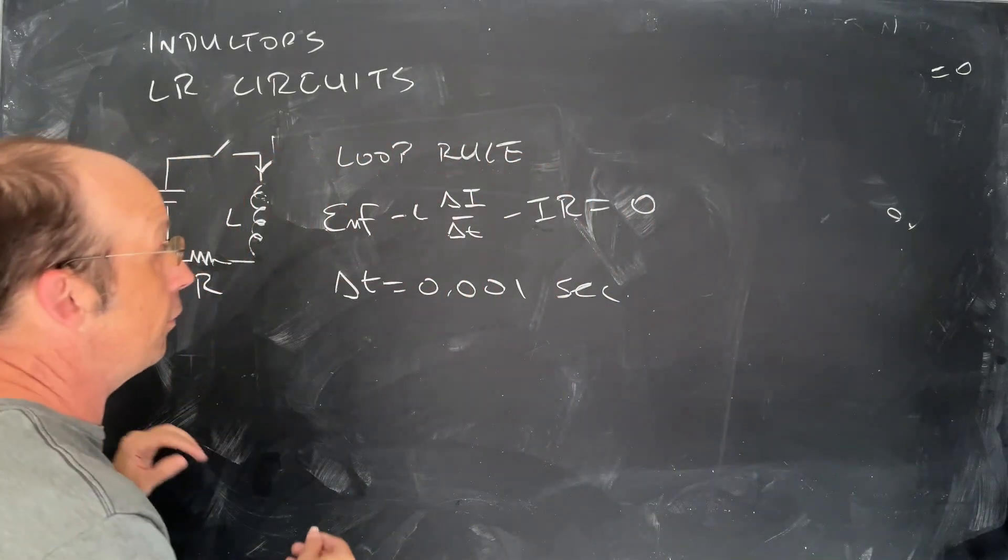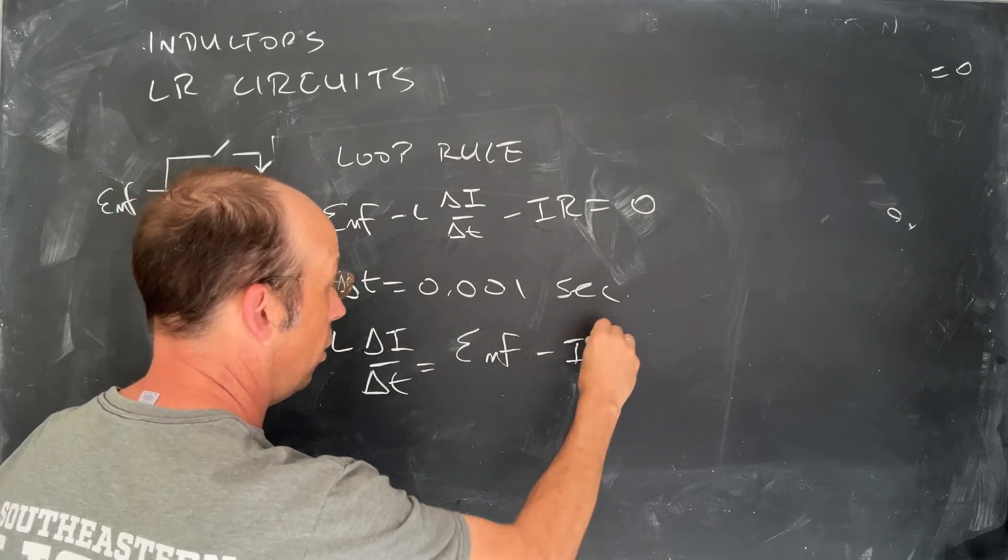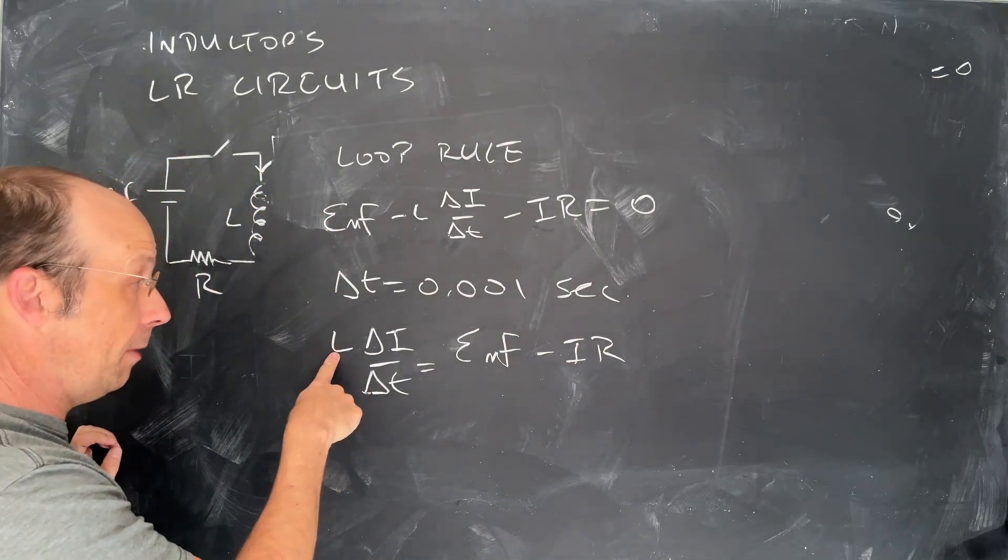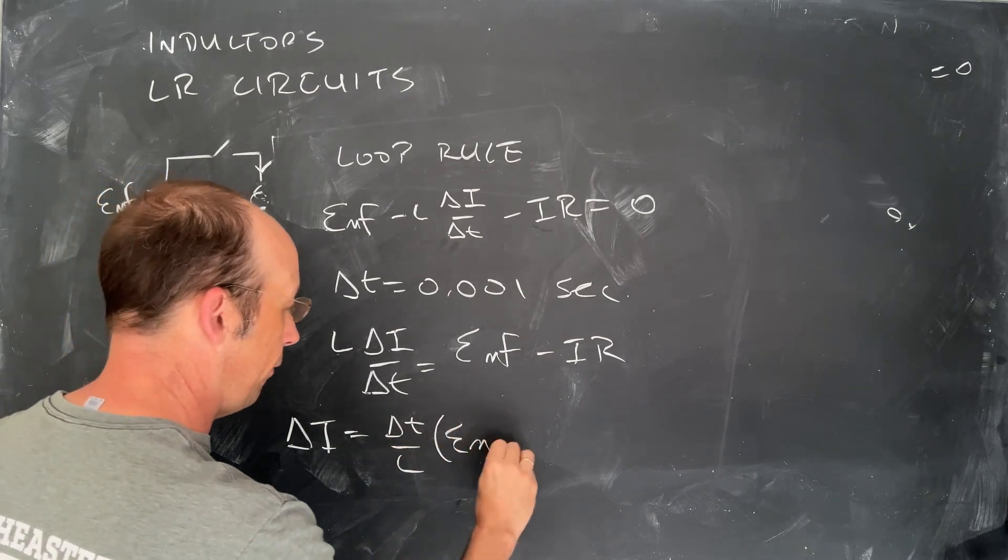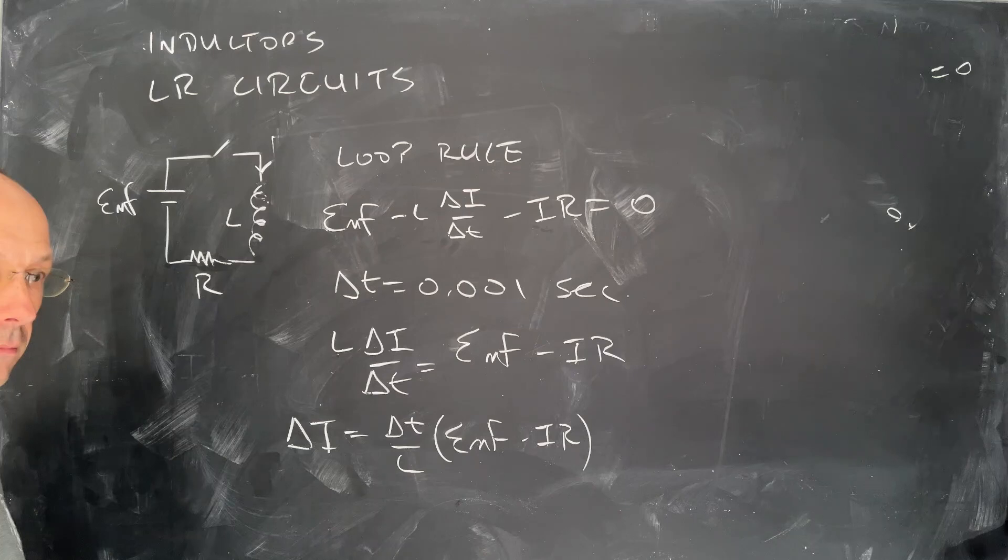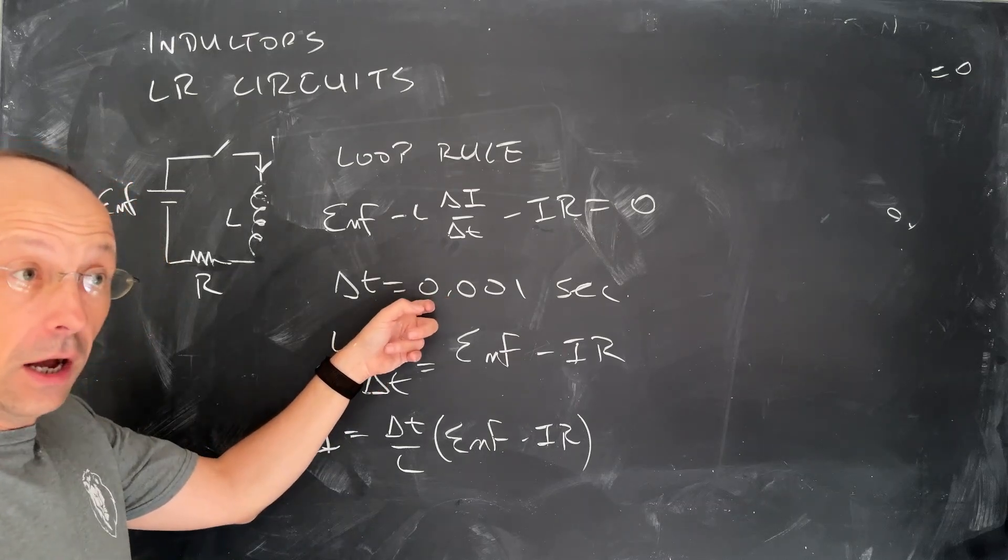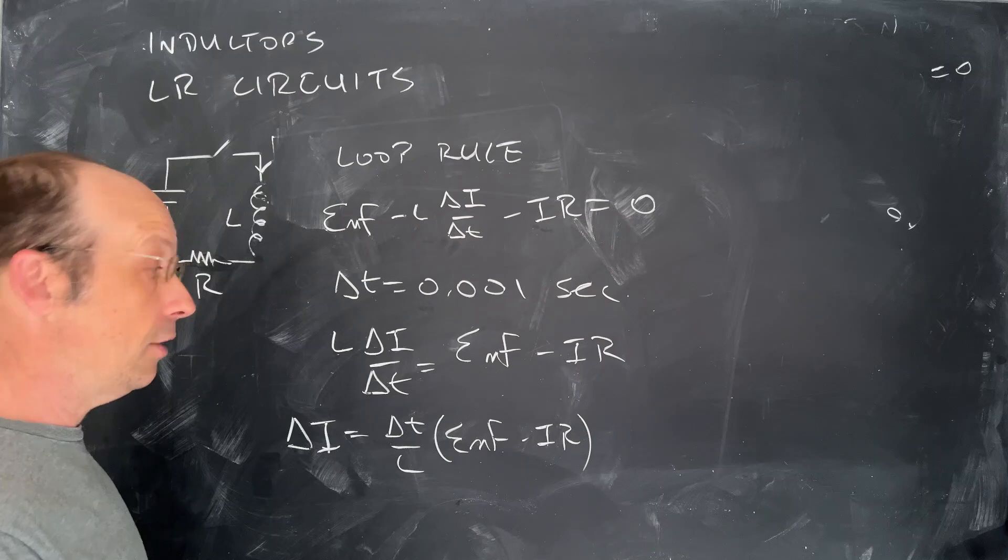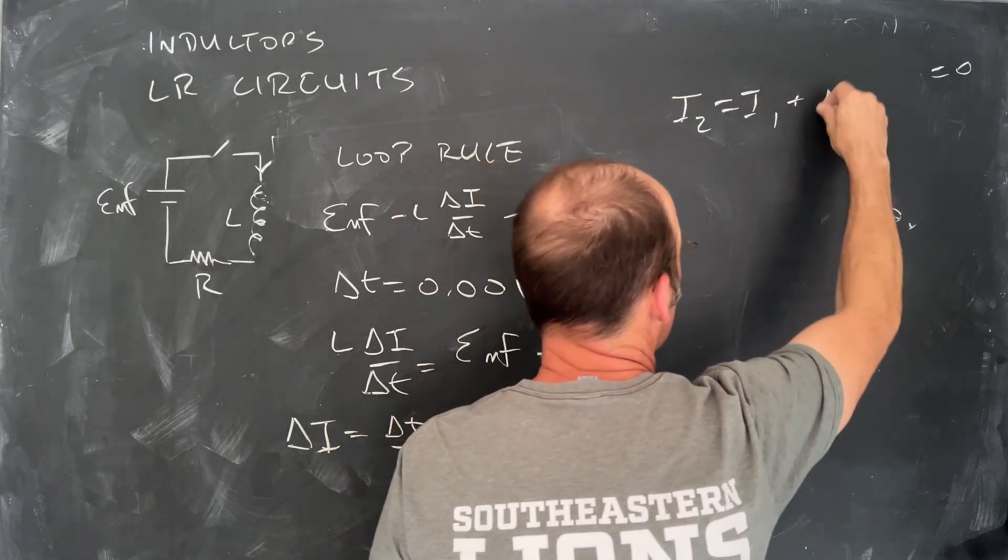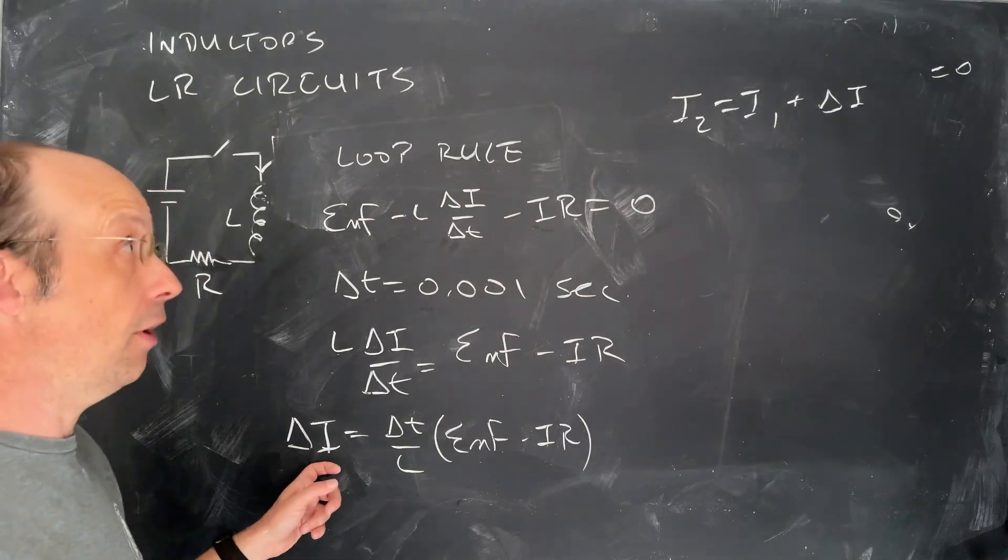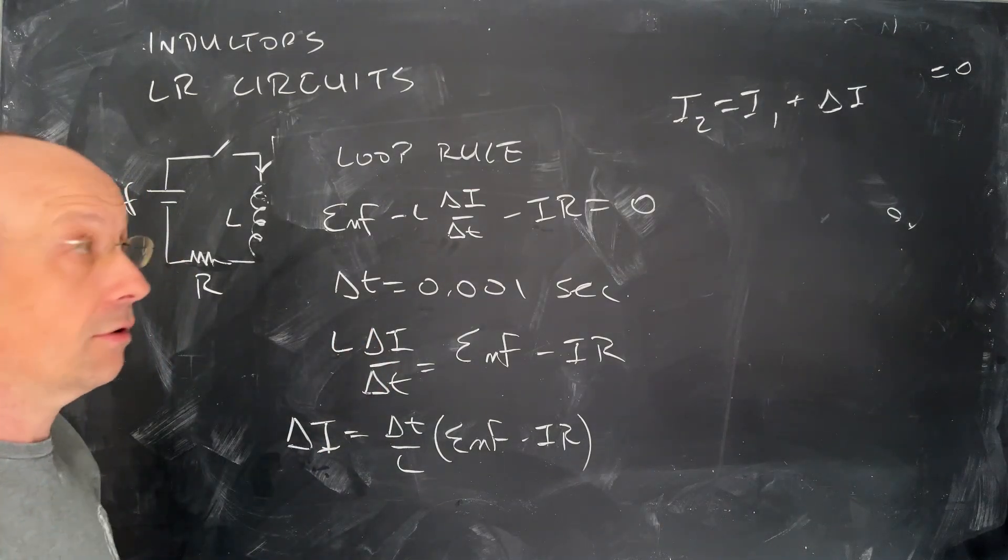So let's just algebraically solve this equation for delta I. I'm going to add that to both sides. L delta I over delta T is EMF minus IR. And now I'm going to multiply both sides by delta T and divide by L. Delta I is going to be equal to delta T over L times EMF minus IR. And what does that get us? Well, that tells us how the current changed during that time interval. Now when I go to the next time interval of 0.001 seconds, I can use the same idea, and I can use this delta I to find the new current. So I can say I2 is I1 plus delta I.